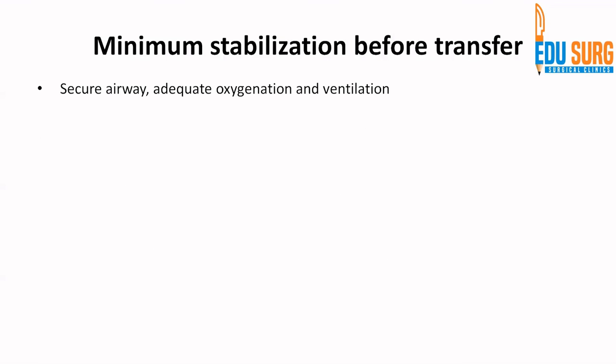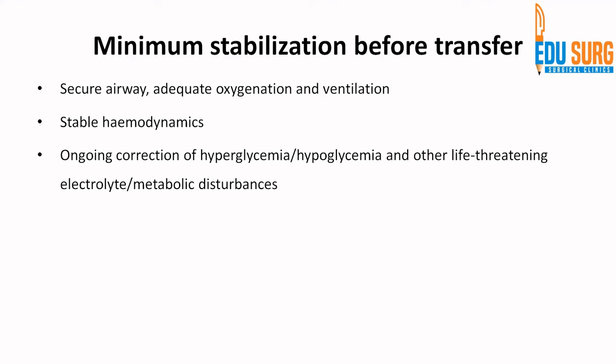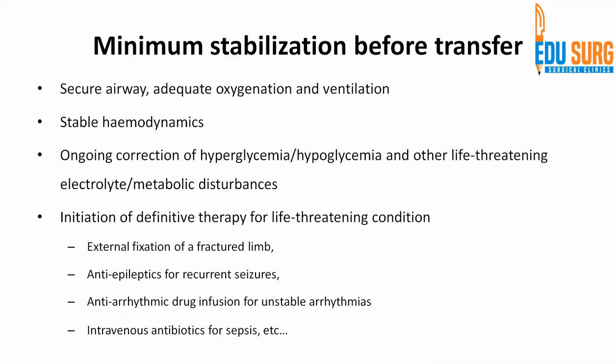When transferring the patient inside a hospital, minimum stabilization again follows the ABC of trauma: secure airway, adequate oxygenation and ventilation — if not intubated, the patient should be able to speak a sentence confirming airway security. Airway, breathing, circulation, stable hemodynamics, ongoing correction of hypoglycemia, hyperglycemia, or electrolyte disturbances, and initiation of definitive therapy can be done before transfer — external fixation of a fractured limb, starting anti-epileptics for seizures, anti-arrhythmics, or intravenous antibiotics for sepsis. This bare minimum stabilization is what all of us do in casualty and is what the guidelines recommend.